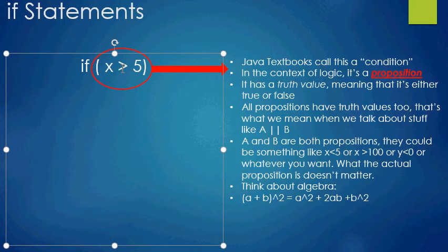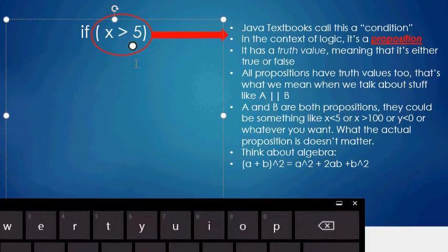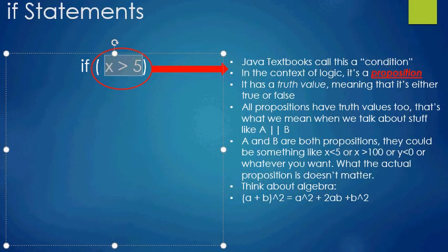Java textbooks call this a condition. In the context of logic, though, it's called a proposition. A proposition is simply a statement which has a true or false value — that is it. There is no middle ground; it's either true or false. X is greater than five is definitely a statement like that — it doesn't matter what x is, it's either greater than five or it's not. So for any value of x, this whole expression x > 5 is either true or it's false. That's why it's a proposition.